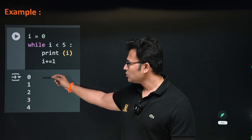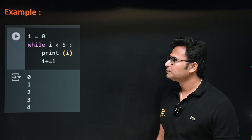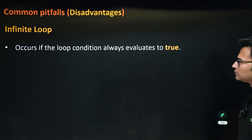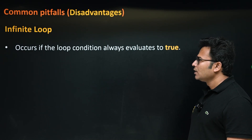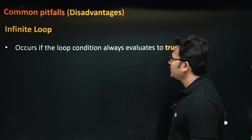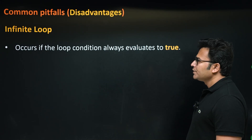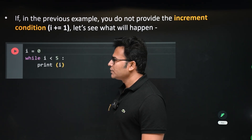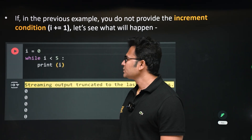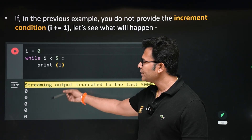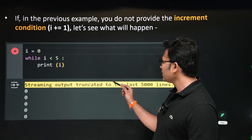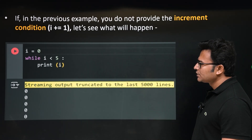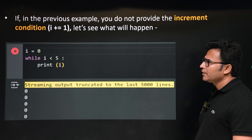In this example, zero to four are printed. You may fall into an infinite loop accidentally when the condition is always true. For example, if 'i = i + 1' is removed from the previous example, it will fall into an infinite loop — zero is being printed many times. The output was truncated, which means it printed many times — that is an infinite loop.